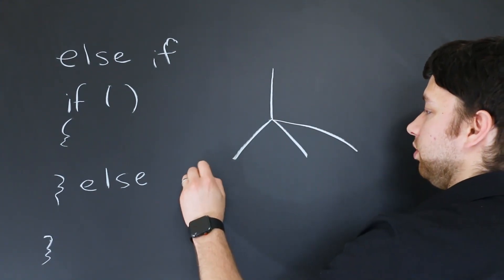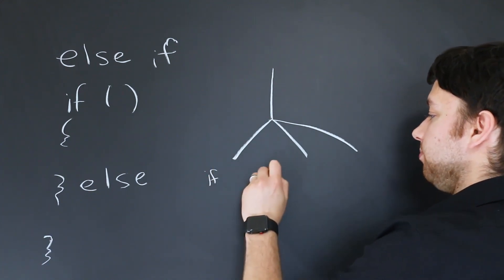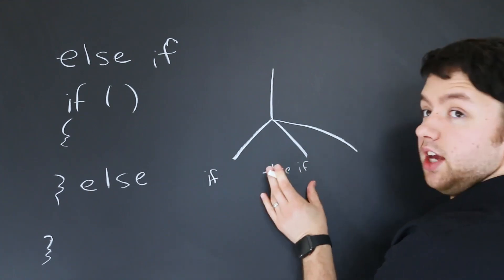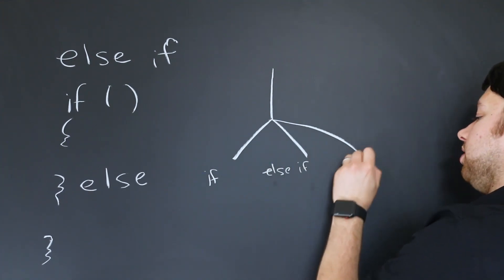With an else if we are going to branch three different ways. So it would look like this where the first one is the if being true, the next one is basically another if, the else if, and then the third one is else.